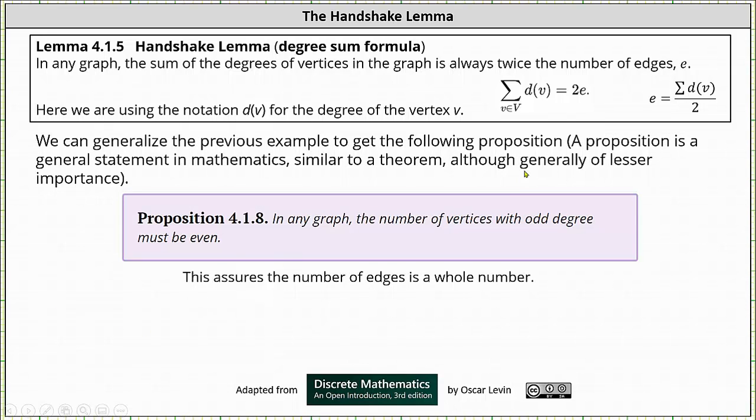We generalized the previous example to get the following proposition. A proposition is a general statement in mathematics similar to a theorem, although generally of lesser importance. The proposition is: in any graph, the number of vertices with an odd degree must be even.